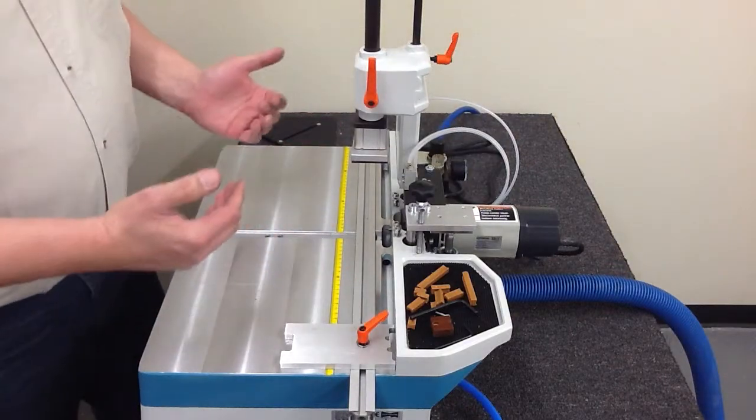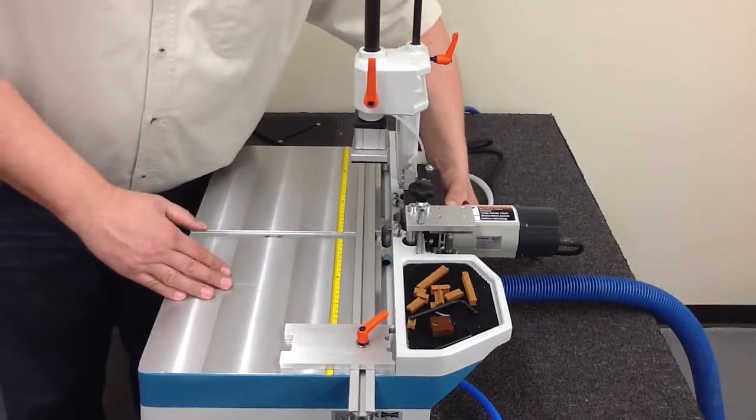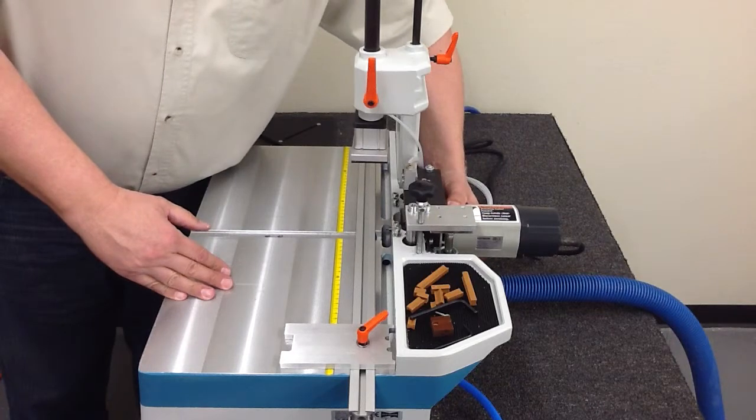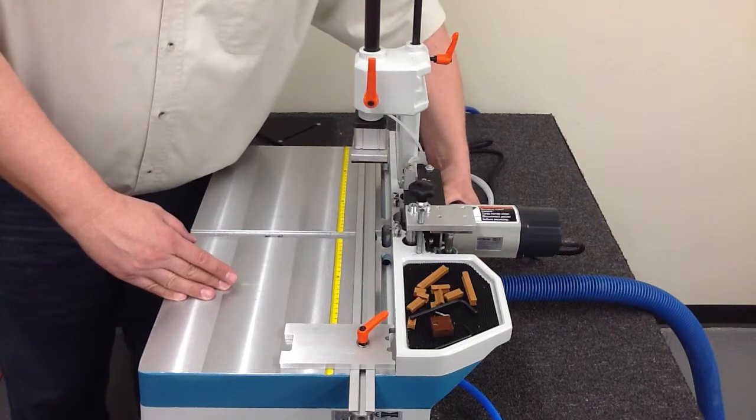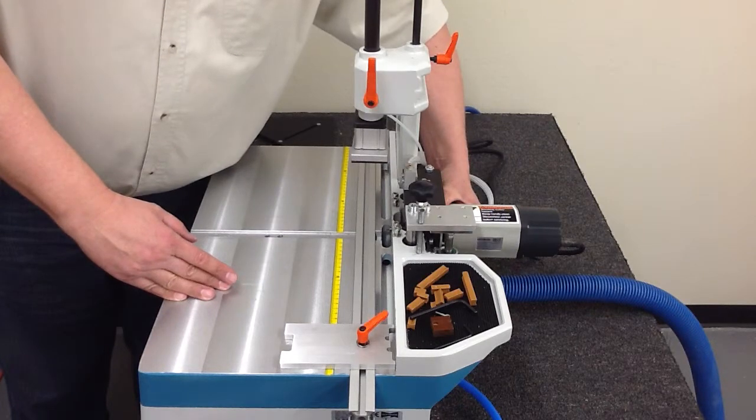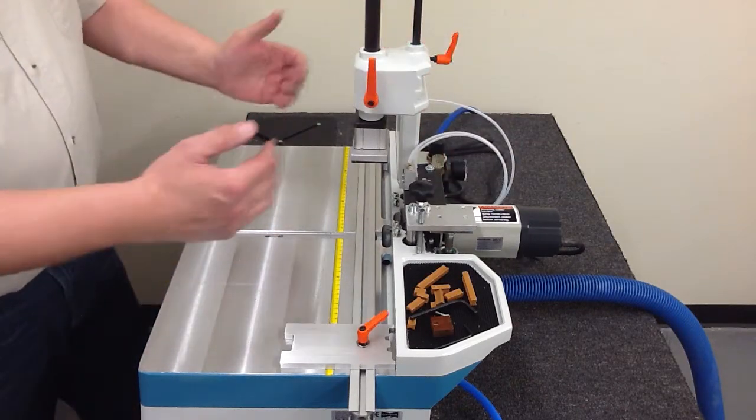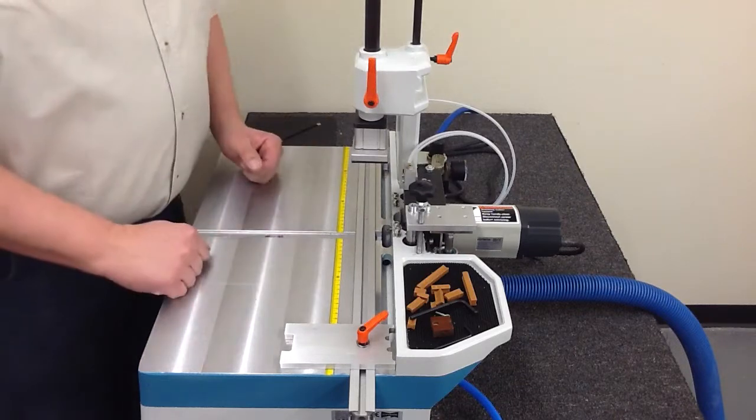When you slide the motor back in, you don't want it all the way in until it bottoms out. Slide it back about three thirty seconds, eighth of an inch, two to three millimeters. Give yourself a little room. This way you have some adjustment range if you need it later on when you do a fine adjustment.